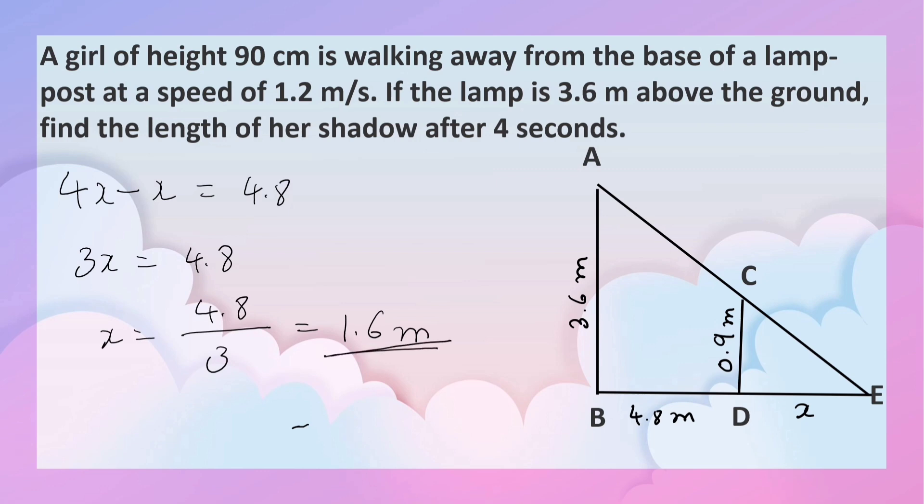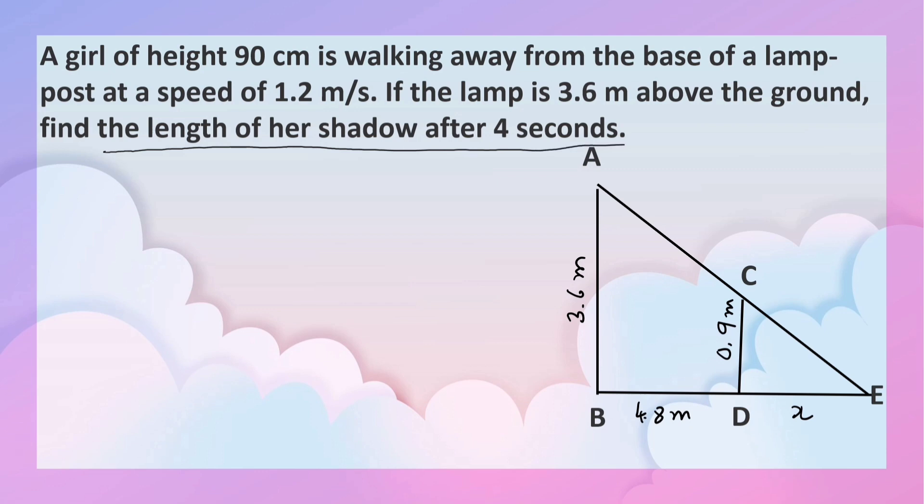So, the length of the shadow of the girl, that is DE, is equal to 1.6 meters. Length of the shadow of the girl after 4 seconds is 1.6 meters.